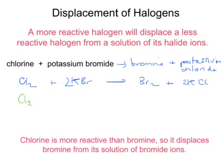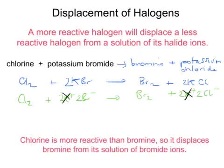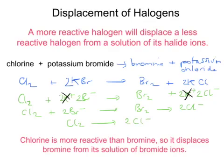We can take this further. Chlorine is a molecule, but potassium bromide is made out of ions — 2 potassium ions and 2 bromide ions. The bromine produced is a molecule, and potassium chloride is made out of 2 potassium ions and 2 chloride ions. We can see here that there is a spectator ion: the potassium ions remain unchanged, so really the reaction is between chlorine and bromide ions to make bromine and chloride ions. The chlorine has gained electrons and been reduced, whereas the bromide ions have lost electrons and therefore been oxidised.